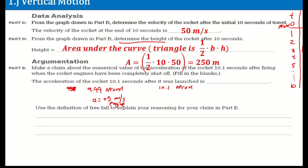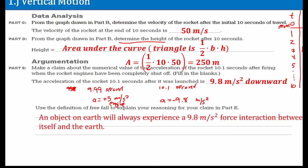If there's no engine at 10.1 seconds, the acceleration is due to gravity, which is 9.8 — or you could use 10 — meters per second squared. And it is downward, so you have to use a negative. So the acceleration is negative 9.8 meters per second squared. I would say that the acceleration of the rocket at 10.1 seconds after launch is 9.8 meters per second squared downwards.